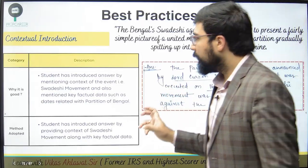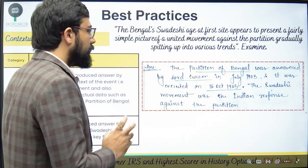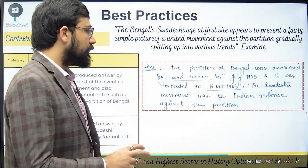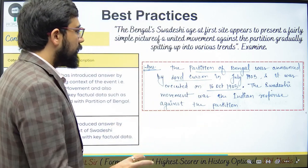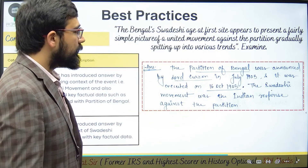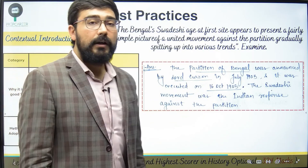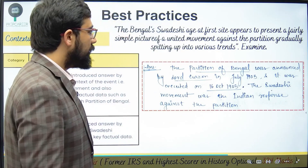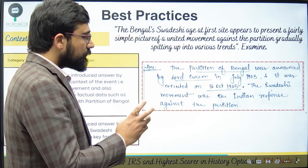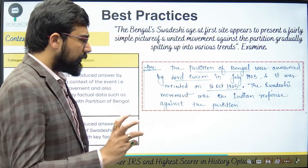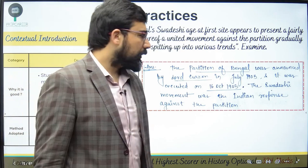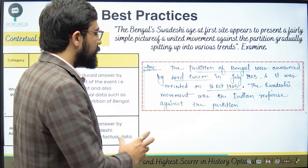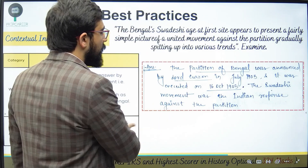The answer's introduction is written very well. The partition of Bengal was announced by Lord Curzon in July 1905 and executed on 16 October 1905, which was celebrated as a Black Day in Bangla Desh — meaning the 'home of Bangla.' The Swadeshi movement was an Indian response against the partition.